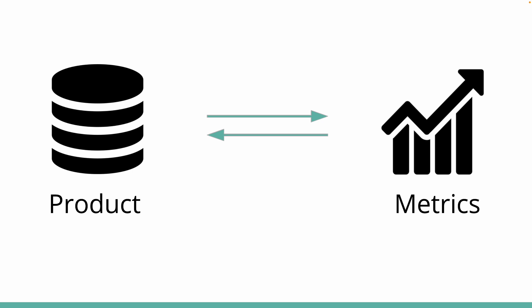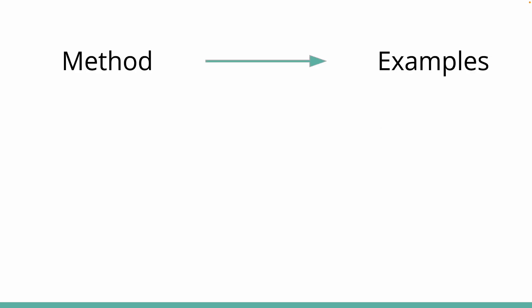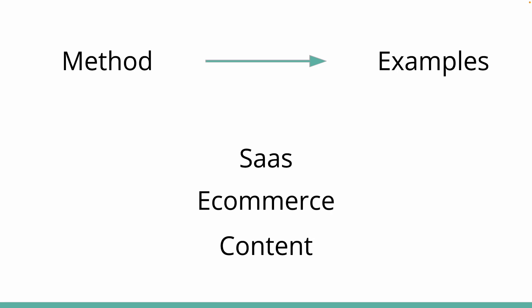This method works both for when you're building a whole product from scratch or if you're adding features to an existing product — I use the term product for both cases. I'm going to start by explaining how this metric-defining method works, and then we're going to do a few examples applying it to products in different categories like SaaS, e-commerce, and content platforms, so you can see it in action.